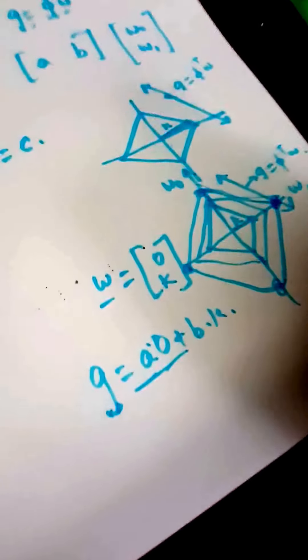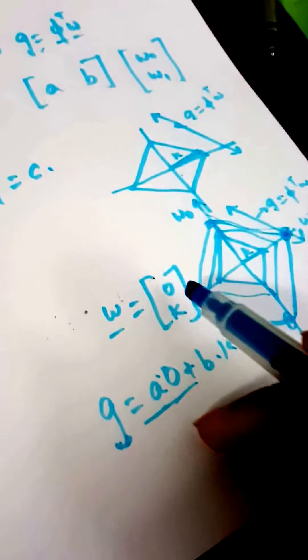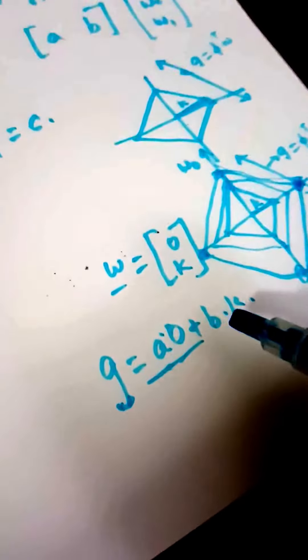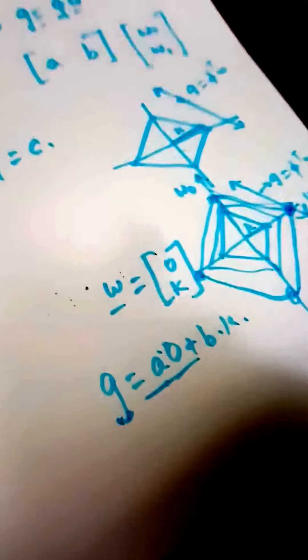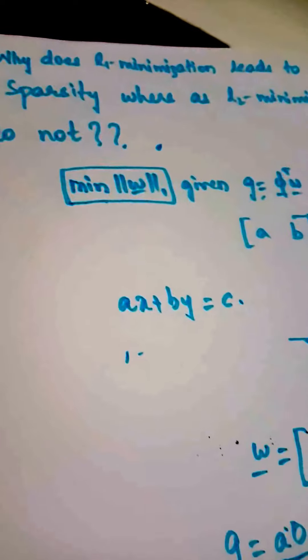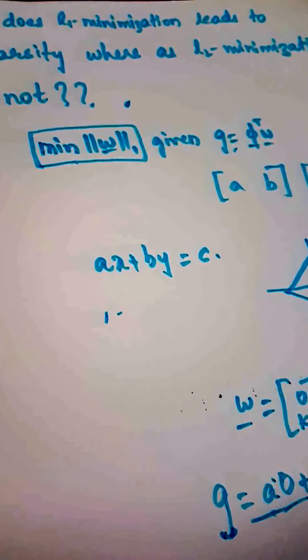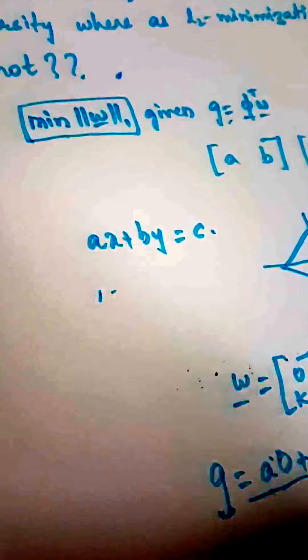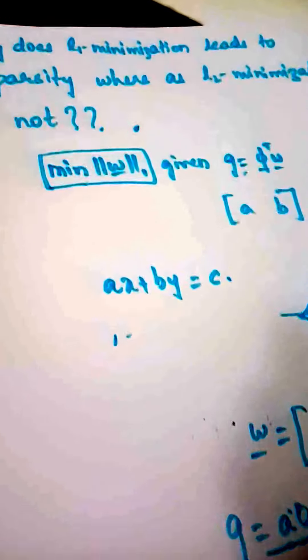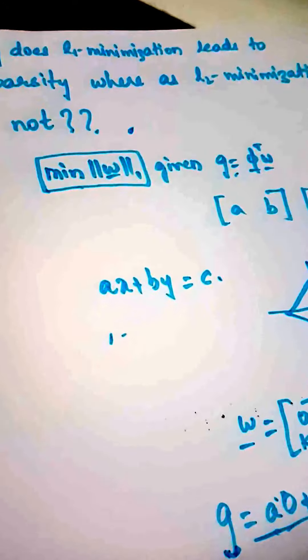So that is why it leads to sparsity. You can see one of the coefficients becoming zero and another coefficient having some value K. That is how L1 minimization leads to sparsity. I'll discuss why L2 minimization does not lead to sparsity in my next video.